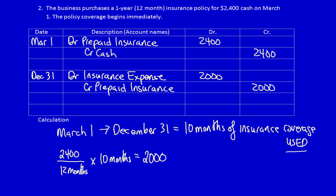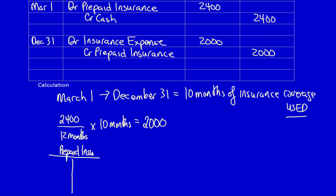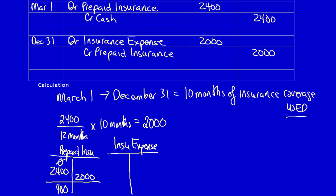Looking at our T-accounts: we had an opening balance of zero, we added in $2,400, then we recognized use of $2,000. So the existing balance in prepaid insurance — what we can still use or consume in the future — is $400. The insurance expense now sits at $2,000.